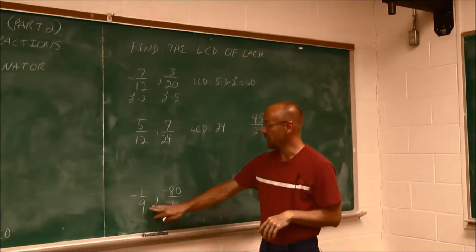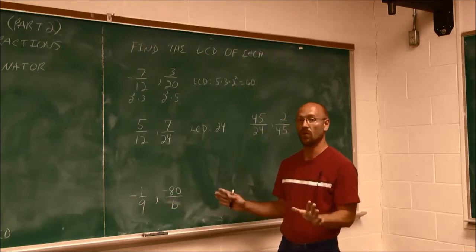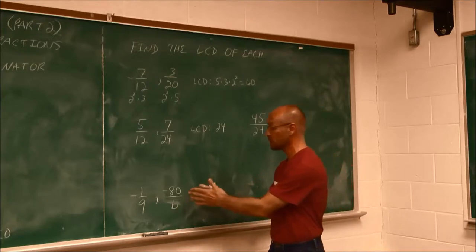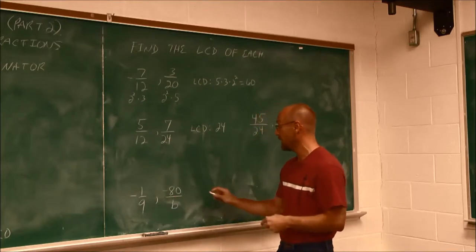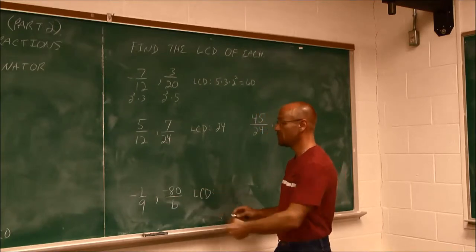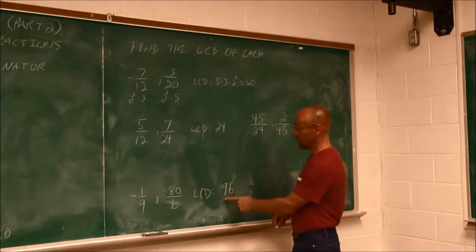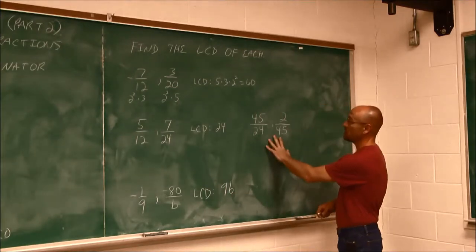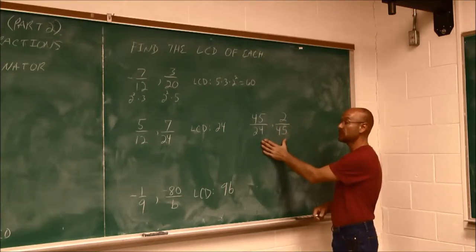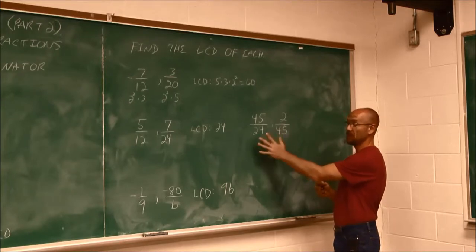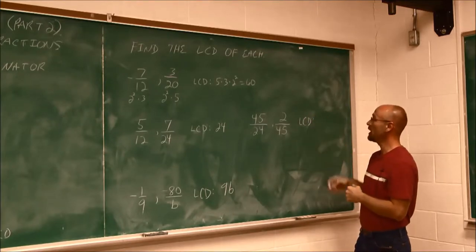What about negative 1/9 and negative 80 over b? Since 9 and b have no common factors — we don't know what b is, so we treat it as a prime value — the LCD is going to be the product of the two: 9b. For the next example, 45 over 24 and 2 over 45, I want you to try this one yourself. Factor them down, recognize that these are not multiples, and construct the LCD.